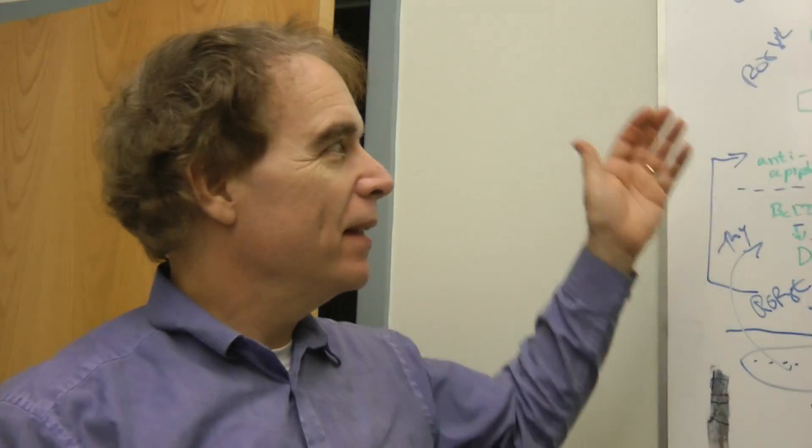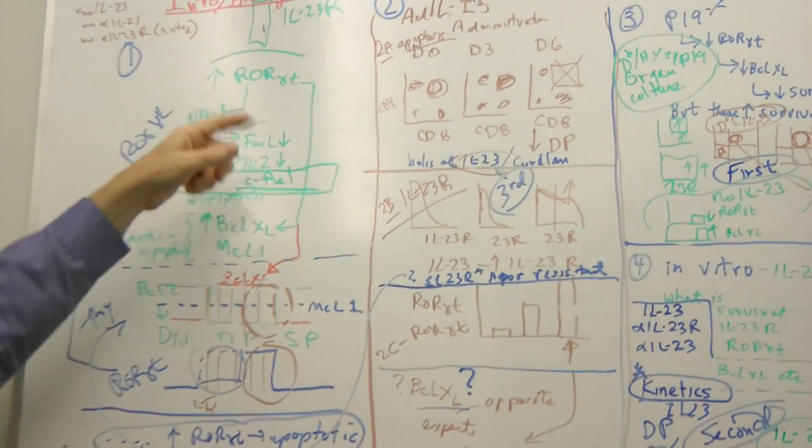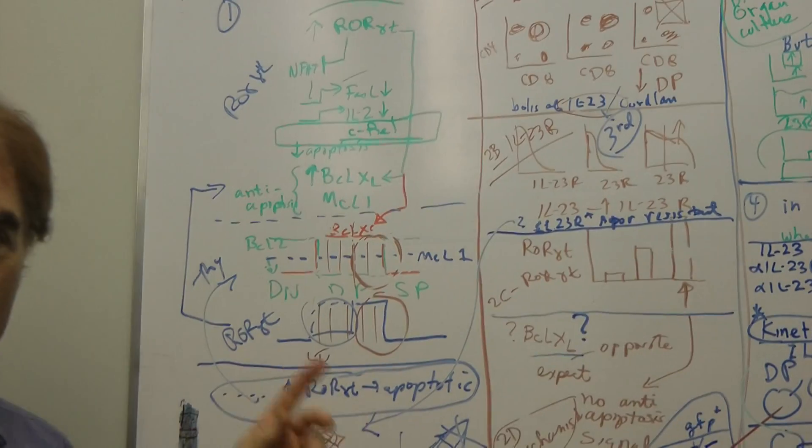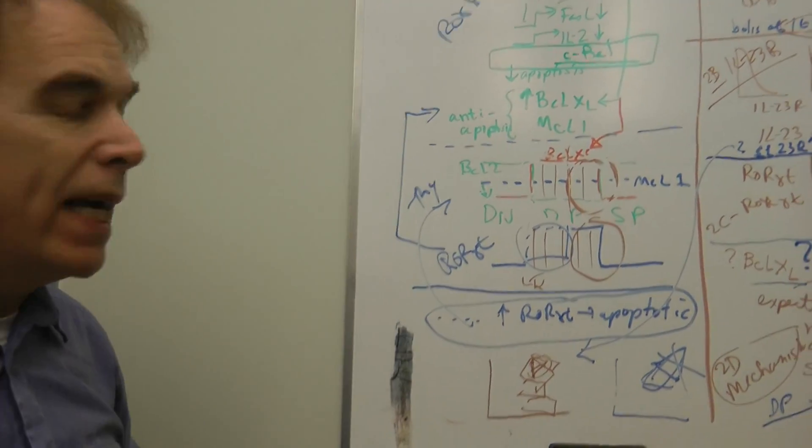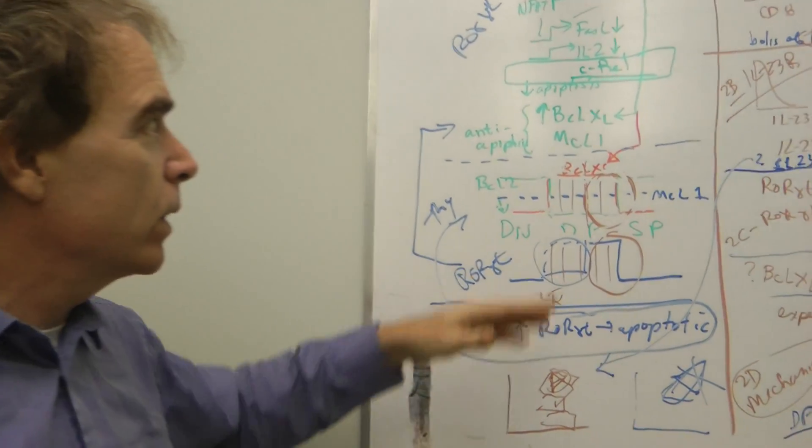This is, today we're going to talk about how IL-23 receptor signals through ROR gamma T to cause negative selection of the thymus. And this is an important point.